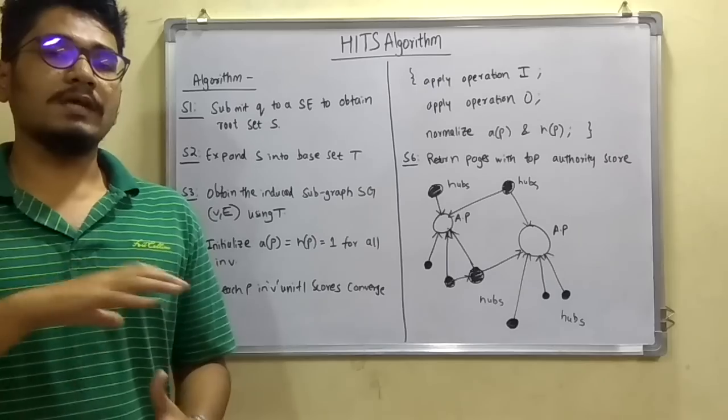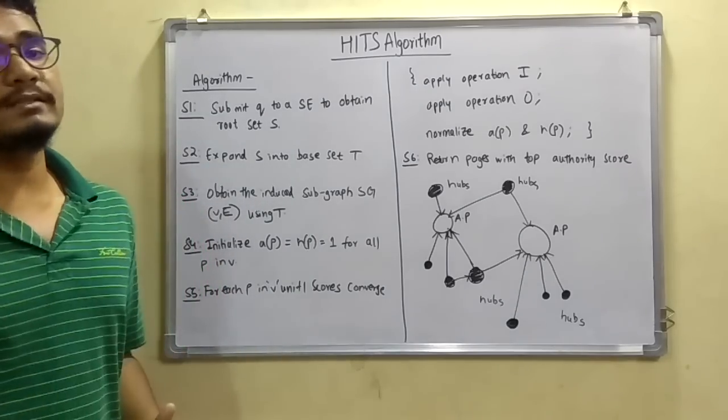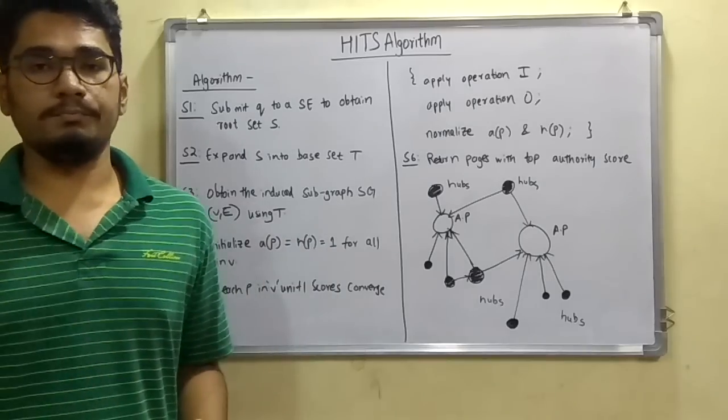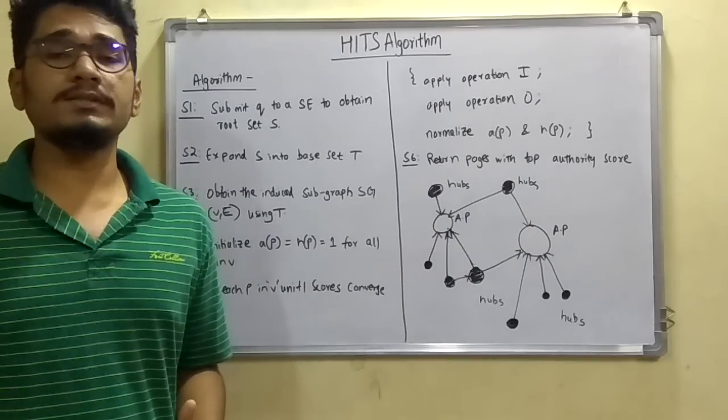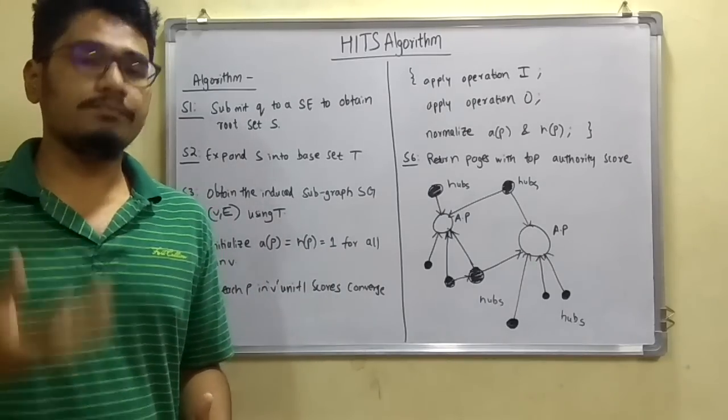Next, after you do this, after all the information is done, then we have to normalize these scores, that is A(P) and H(P). Obviously after many millions of iterations in less than a few seconds,